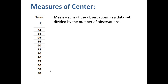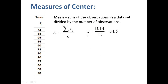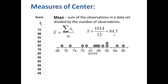The mean is the sum of the observations in a data set divided by the number of observations. Our symbol for a sample mean is x-bar. The summation symbol means to sum up all individual values x1, x2, x3, all the way down to x12, and n is the number of data values in our sample. For this particular data set, summing all the scores gives 1,014, and with 12 data values, our sample mean x-bar is 84.5. We can see on the graph below that this is where the data set would balance.